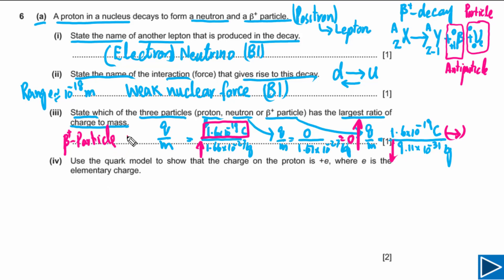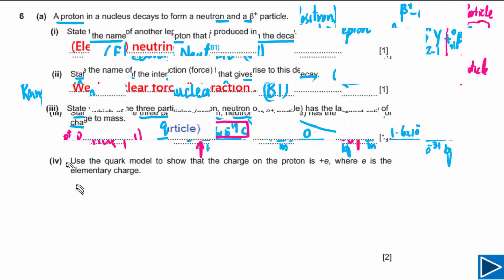This question has one B mark, and the answer — beta plus particle — has to be in your answer.